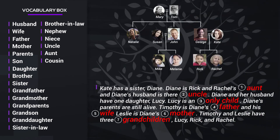Okay, now let's go over the answers. Kate has a sister, Diane. Diane is Rick and Rachel's aunt, and Diane's husband is their uncle. Diane and her husband have one daughter, Lucy. Lucy is an only child. Diane's parents are still alive. Timothy is Diane's father, and his wife Leslie is Diane's mother. Timothy and Leslie have three grandchildren: Lucy, Rick, and Rachel.